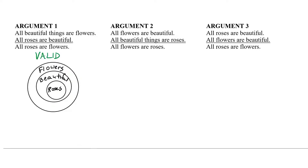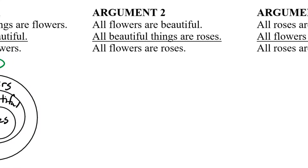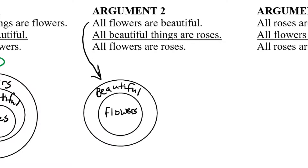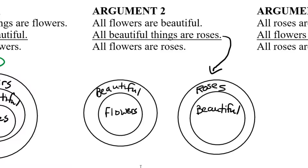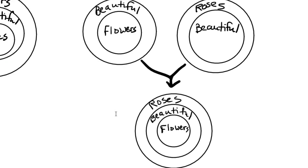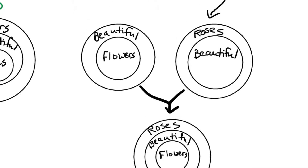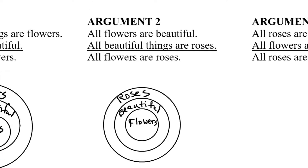Now let's look at argument two. The first premise says 'all flowers are beautiful,' so the flower circle goes inside the beautiful circle. The second premise says 'all beautiful things are roses,' which means the beautiful circle goes inside the rose circle. Combining both premises, the flower circle must be within the beautiful circle, which must be within the roses circle. Looking at this diagram, the flowers circle is inside the roses circle, so this is also a valid argument.